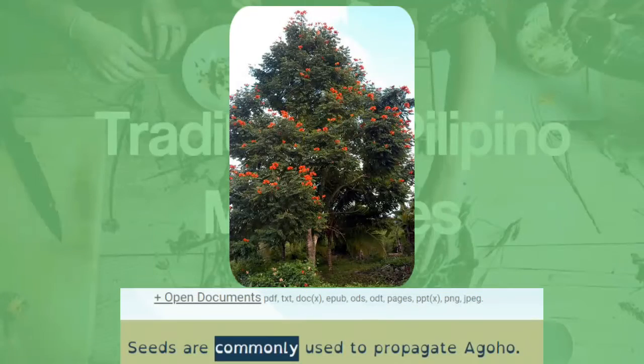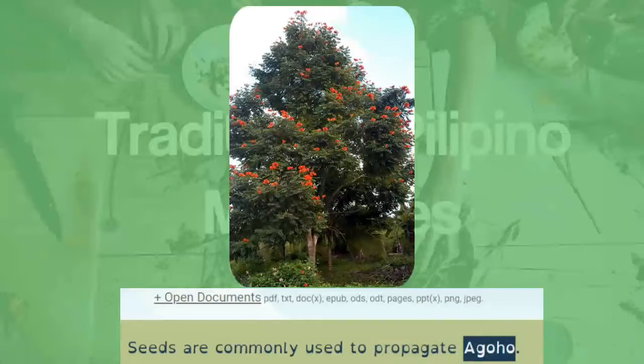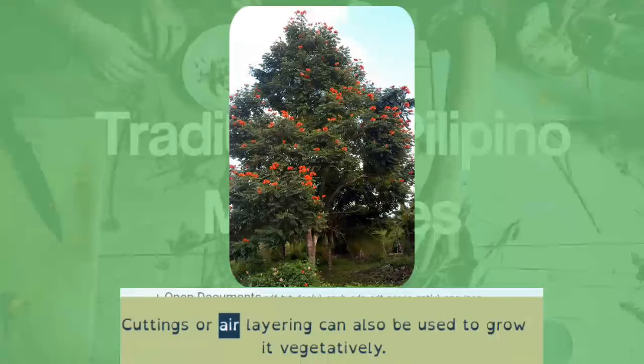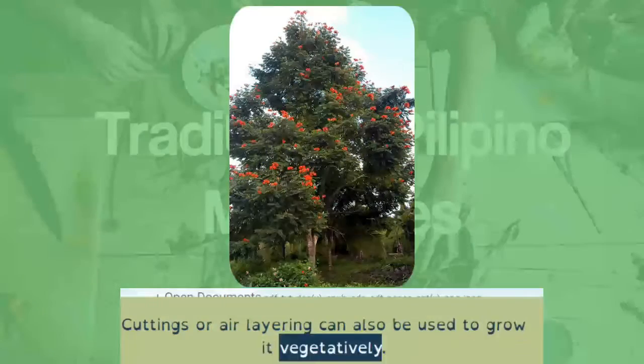Seeds are commonly used to propagate the tree. Cuttings or air layering can also be used to grow it vegetatively.